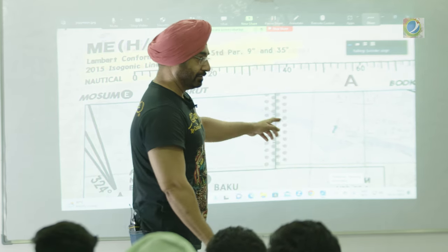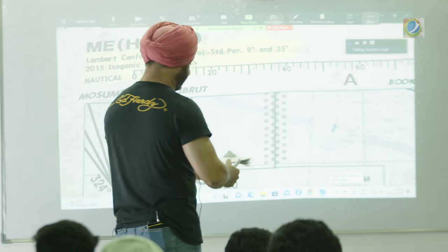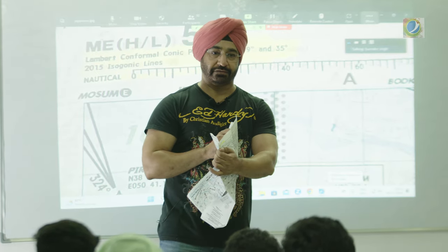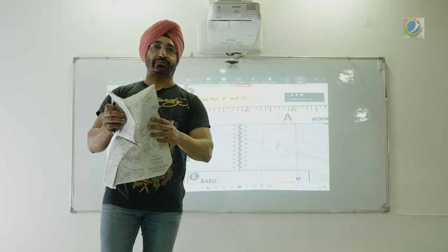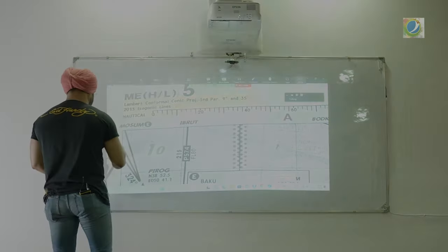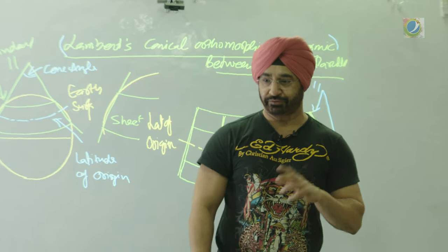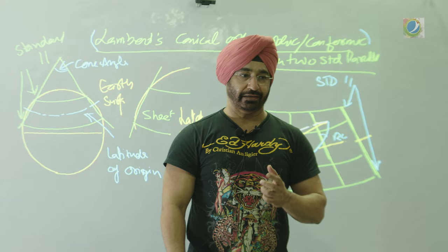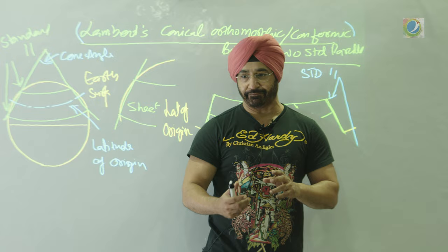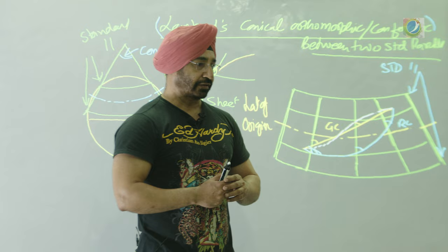What we use as a pilot is Lambert's — all these Jeppesen charts. Any chart you open, you will find the projection information on the left side. Outside the two standard parallels, it is of no use to us. In this class, we saw how a simple conical projection is modified mathematically by choosing two standard parallels to make it orthomorphic, referred to as Lambert's orthomorphic conical projection, which we use for Jeppesen charts.